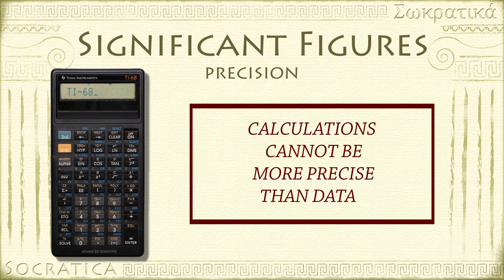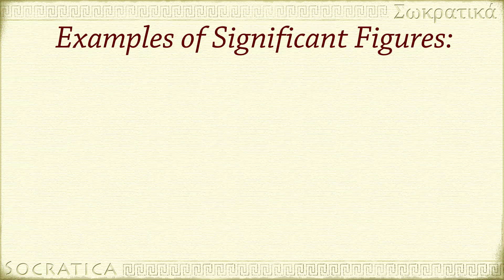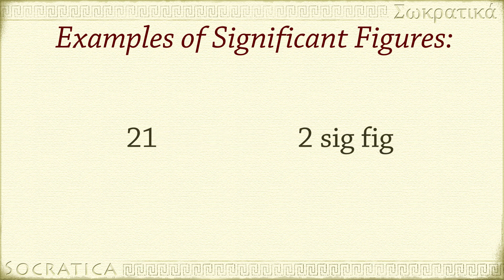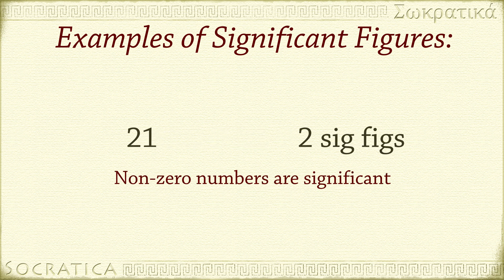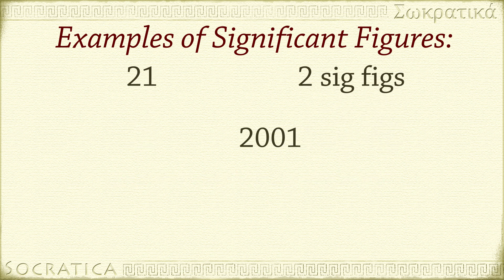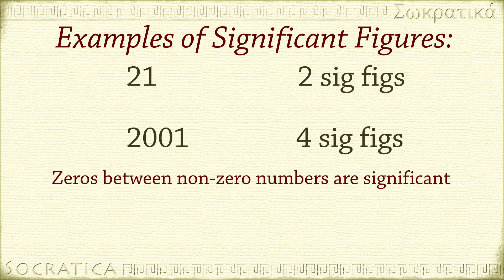That would be misleading. We'll start with some quick examples of significant figures, and then explain the rules. 21 has 2 sig figs — all non-zero numbers are significant. 2001 has 4 sig figs; all 4 of these digits are significant, including the zeros in between non-zero numbers.